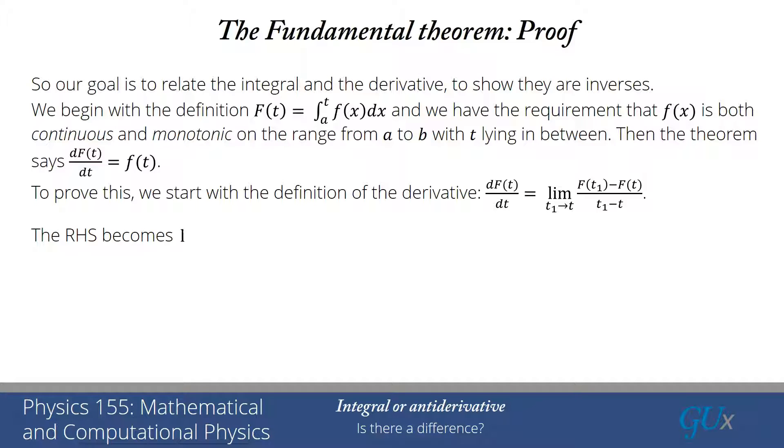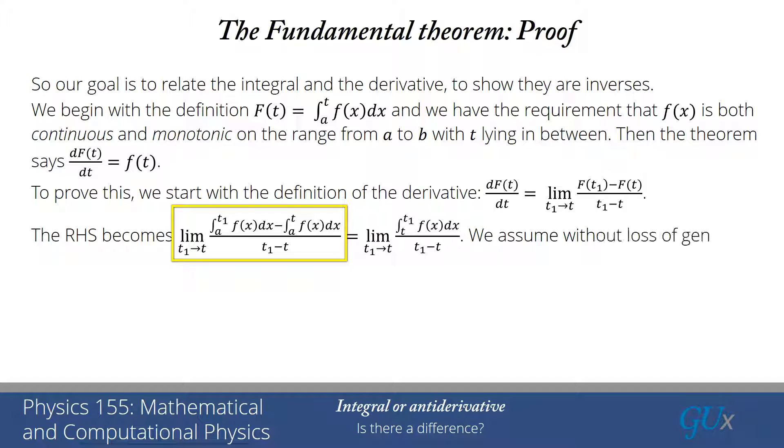All right, so let's now substitute in what F(t) is. F(t) is defined by the integral. So I have an integral from a to t1 of f(x)dx minus the integral from a to t of f(x)dx. And now I can combine those two integrals. And by combining those two integrals, I'll get one integral, which is going from t to t1 of f(x)dx.